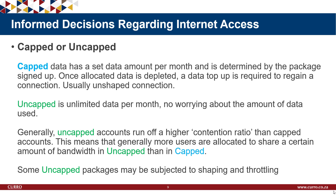Another vital thing to consider is capped or uncapped data. Capped data has a set data amount per month determined by the package you signed up for. Once the allocated data is depleted, a top-up is required to regain connection — usually an unshaped connection. You can buy 2 GB, 5 GB, or 100 GB; you use it as you please, but once it's done the internet stops and you need to buy more. Uncapped is unlimited data per month, which sounds great — but uncapped accounts generally run off a higher contention ratio, meaning more users share a certain amount of bandwidth.